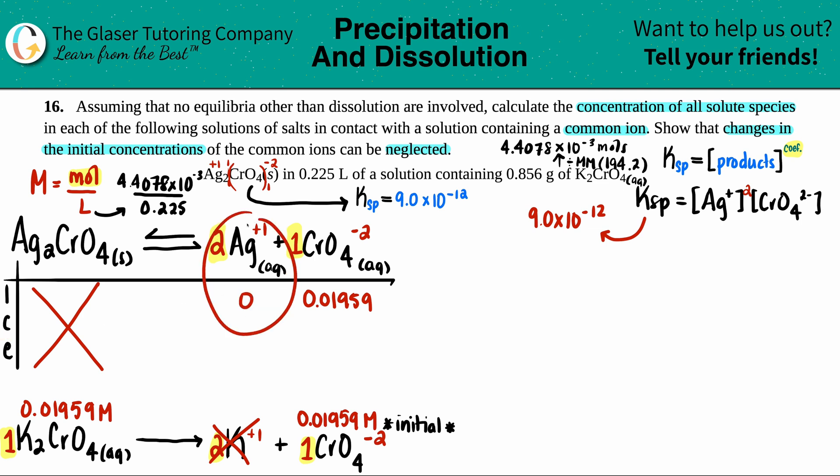Change: you can only go up but by how much nobody knows, so plus something in terms of x. It has to go with your coefficient, so this is plus 2x and this is plus 1x. Zero plus 2x is 2x. This whole thing together is 0.01959 plus x.